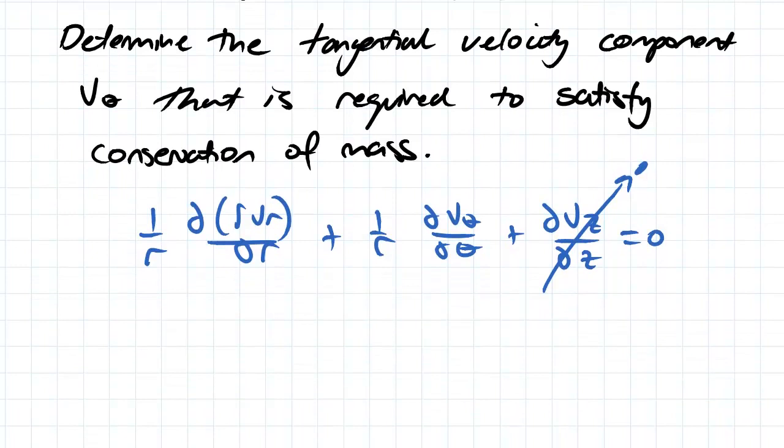If we rearrange for our tangential velocity, which is what we want to find, the derivative of the tangential velocity is just going to be equal to dr vr dr. So this is our equation here.